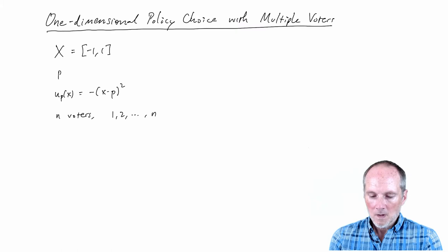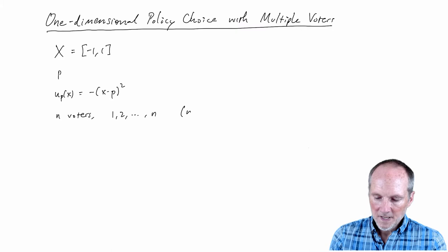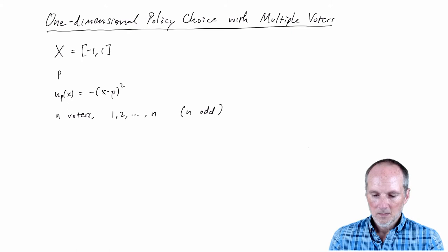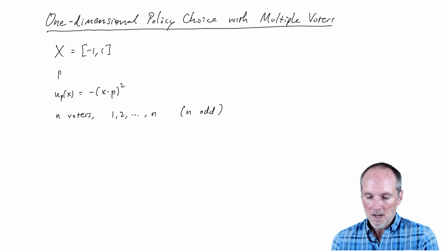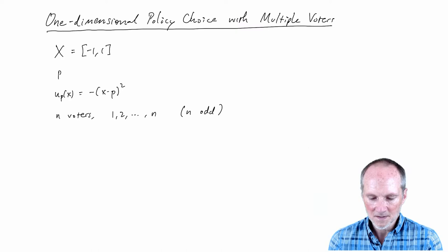Let's assume that n is an odd number. In rational choice modeling of politics, it can be simpler to assume an odd number of voters — not much rides on it, but it makes the presentation simpler. So we have an odd number of voters.